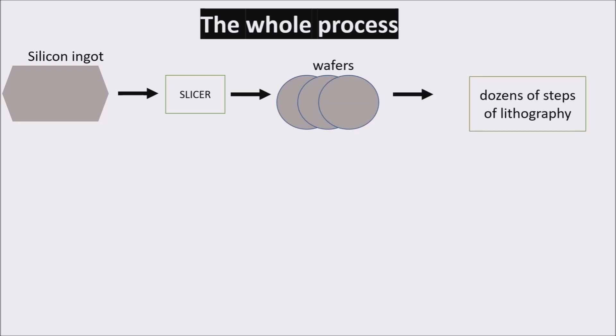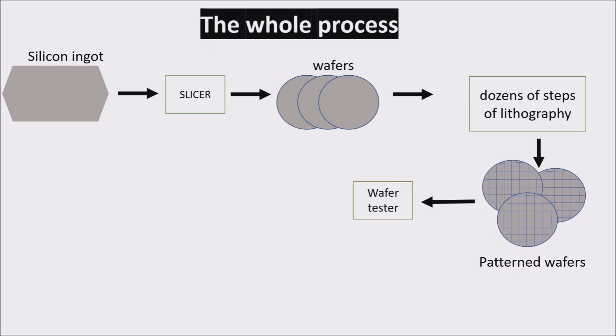The wafers go to a series of processing steps during which patterns of chemicals are placed on each wafer, creating transistors, conductors, and insulators. A single microscopic flaw in the wafer in one of the dozen patterning steps can result in that area of wafer failing.